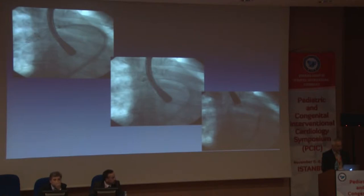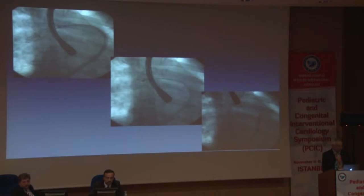The stiffer devices, like the Amplatzer devices — this is an ASD device which has embolized into the right pulmonary artery — it's very important to try and catch it by the screw end. Once you've done that, pull it into a big sheath and then retrieve it into the sheath. It's safe to do so like that.